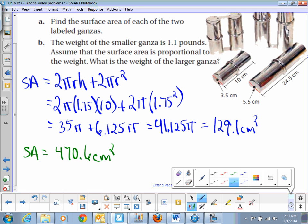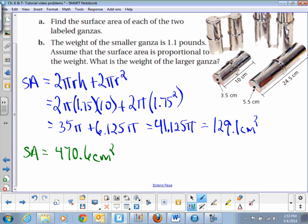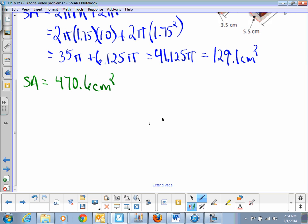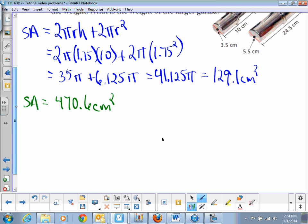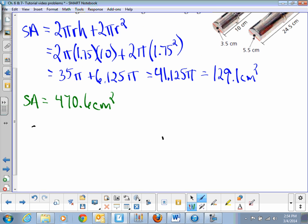Now part b: back to our good friend, the proportion. The weight of the smaller gonza is 1.1 pounds, and if they're proportional, that means we can write a proportion. We need to find the weight of the larger gonza. What I say we do is let's just write a proportion of small gonza to large gonza.